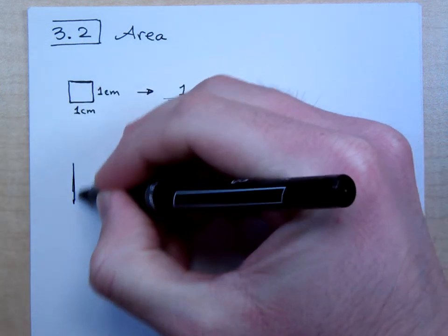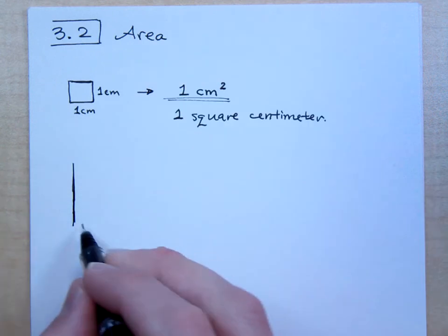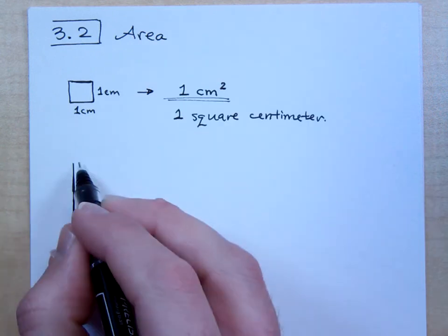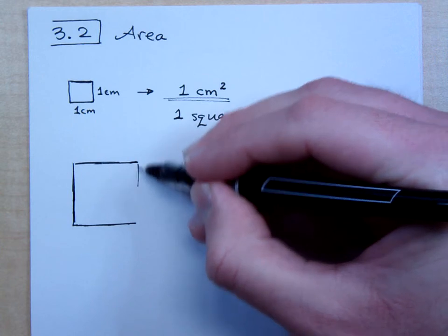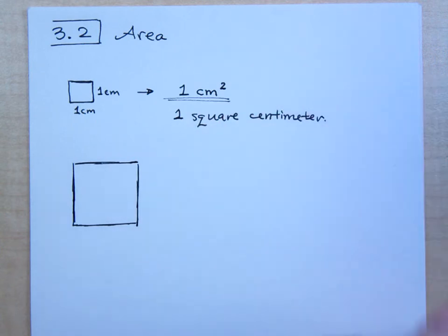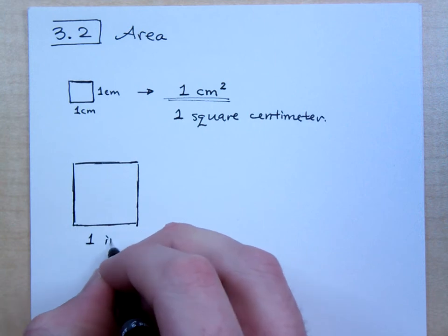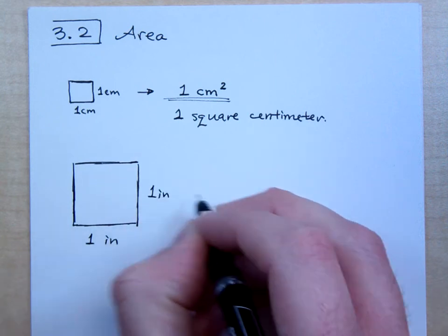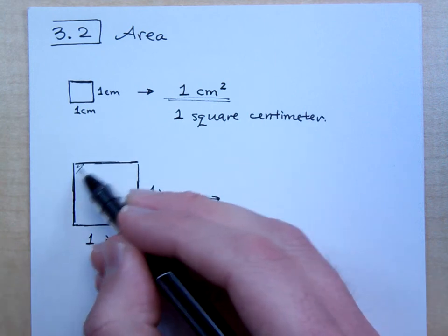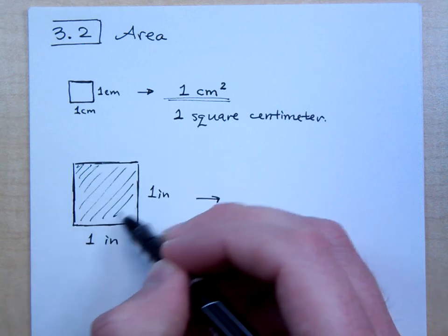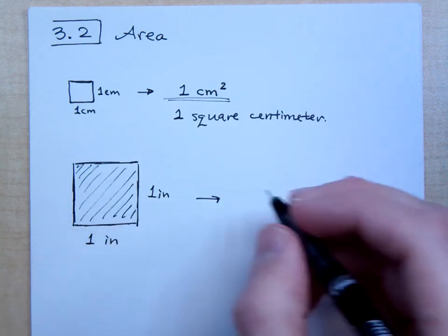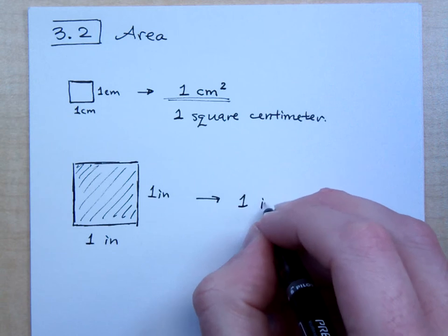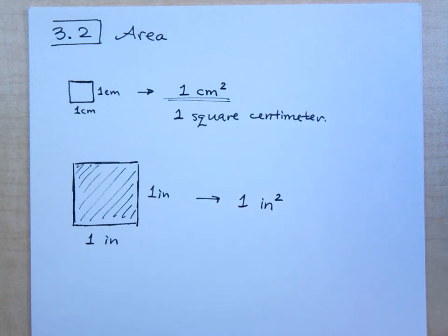If I were to make this a little bit large, I'm just kind of eyeballing it here. If this is one inch by one inch, then this whole thing, all of the area here is what? We would say is one square inch like that.